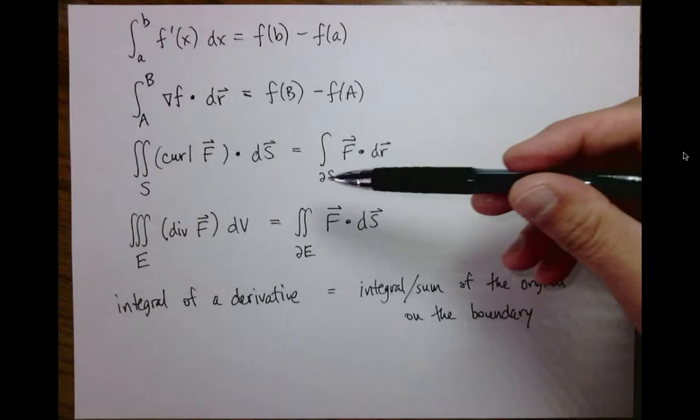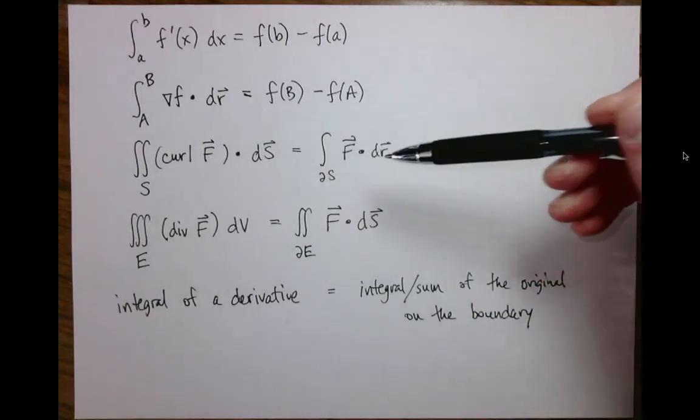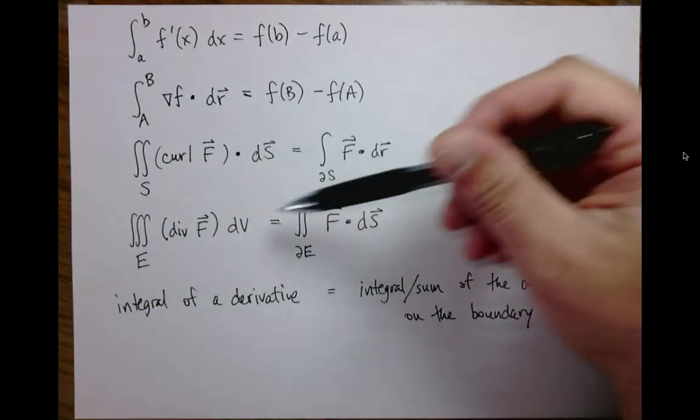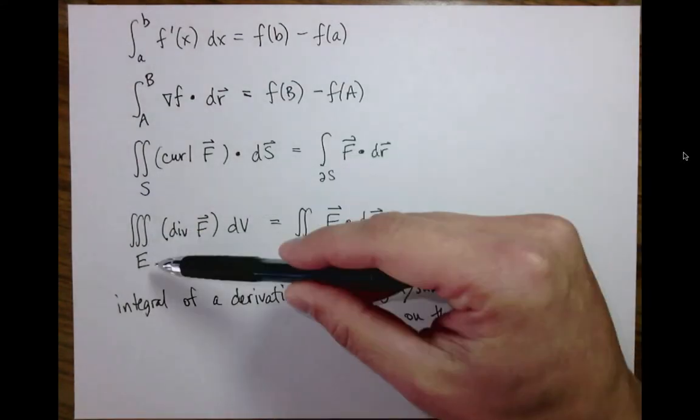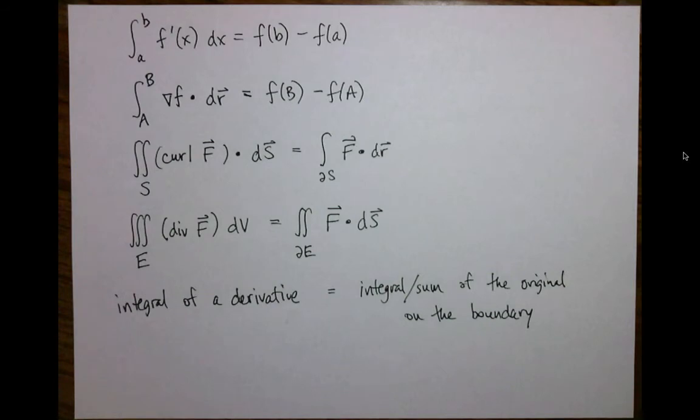And then for vector fields, of course, we have a curl and the divergence form. And the boundary depends on whether the thing is a surface or a solid. But all the functions state the same thing in different terms.